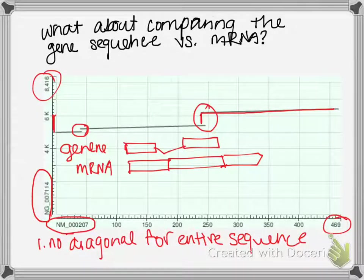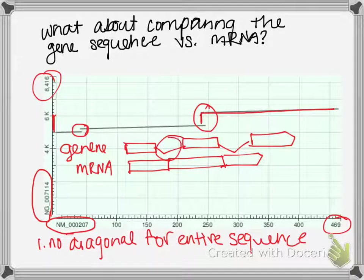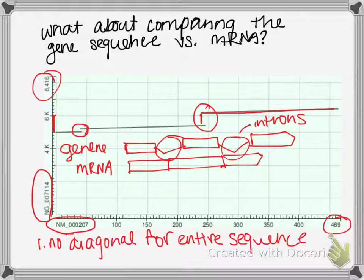And these are what we call introns. They are not present in the mature RNA. And the parts that will actually be expressed into a protein are called exons.